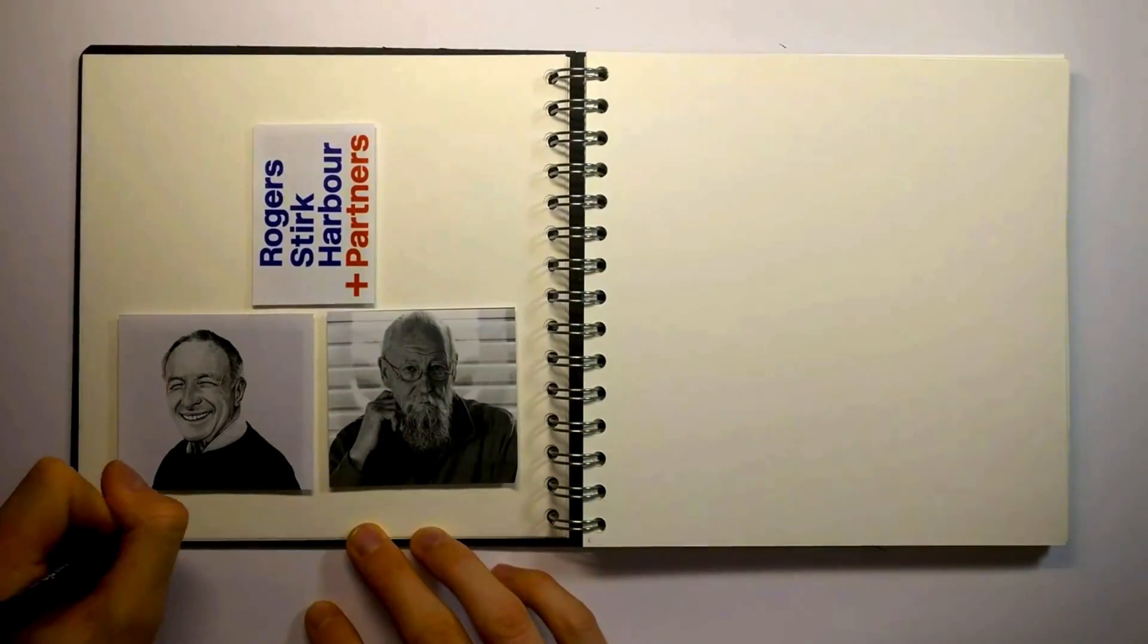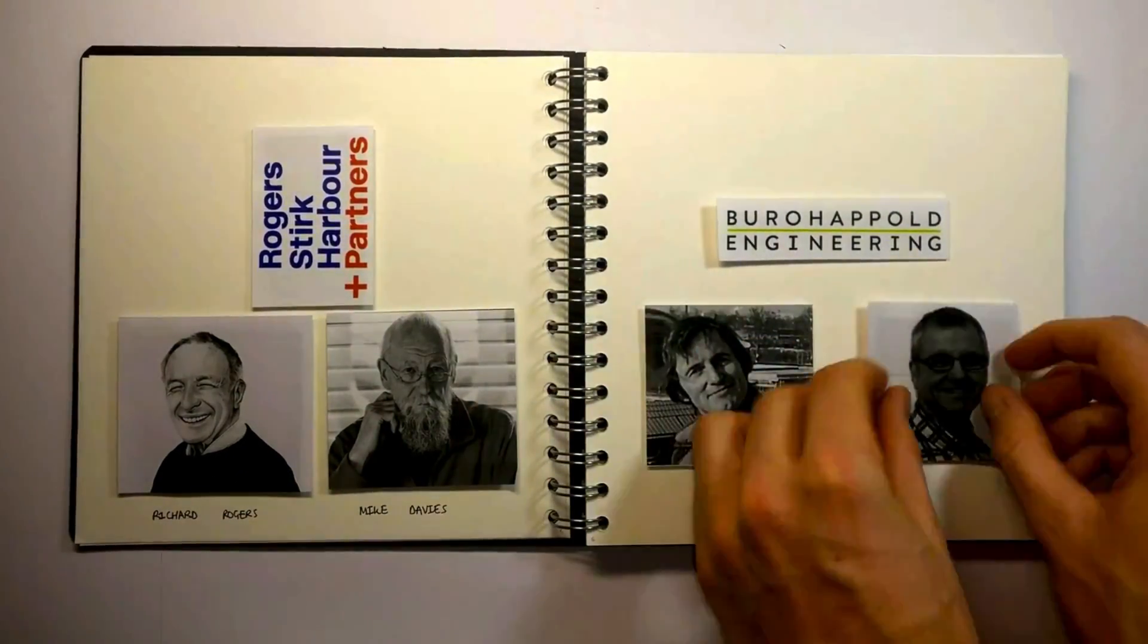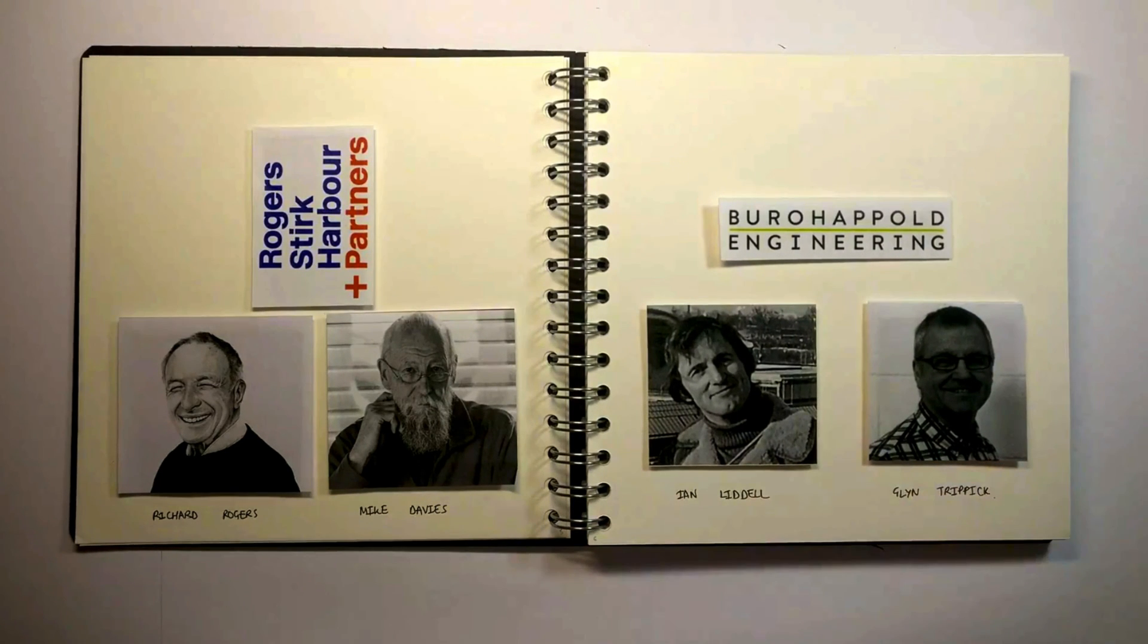The tender was won by the architects Rogers Sturcom Harbour and engineers Bureau Hapold, leading to the Millennium Dome that we are all familiar with today. This video will focus predominantly on the architectural intent of the Millennium Dome and how it is achieved through the designer's approach to structural engineering.